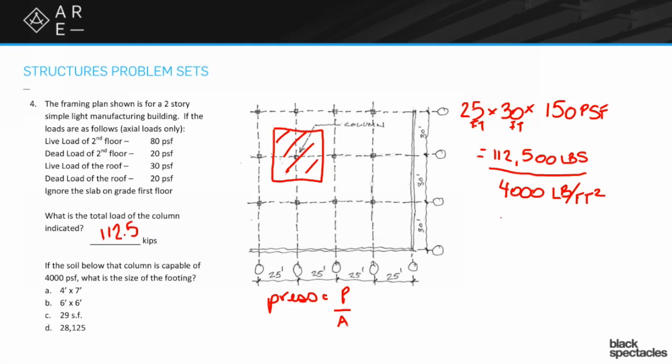When you do this math, it ends up being 28.1 square feet. There's an interesting question now. Our answers are four times seven feet, which is 28 square feet. That's pretty darn close, but there's two problems with that. Problem number one is it's 28, not 28.1, so you actually are a little bit less than what the requirement was. What's the other problem with four times seven? Well, it's rectangular, which you can do, but since it doesn't tell us anything about being up against a property line, why would you want to do that?